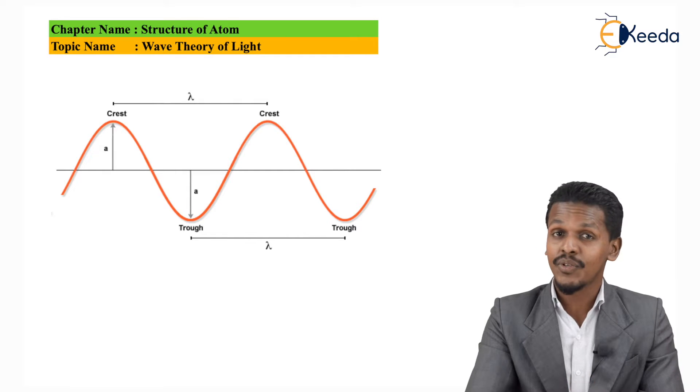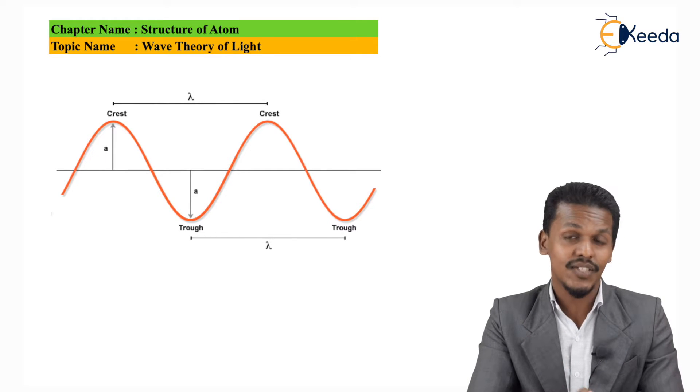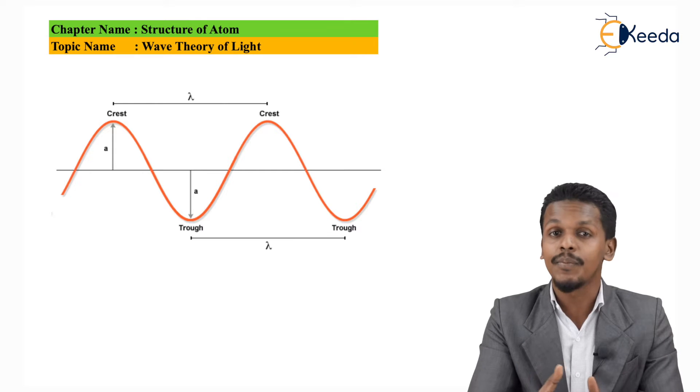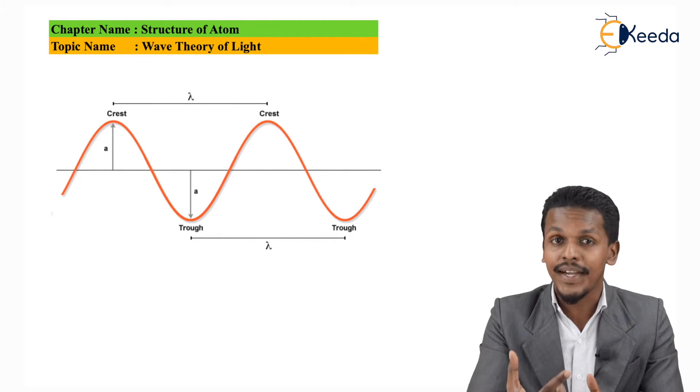So here in the above diagram, as you can see, there are two waves - one is blue colored and one is red colored. Consider the blue color as the electric wave and the red one as a magnetic wave. As you can see, both waves are traveling in a straight direction but they are perpendicular to each other.